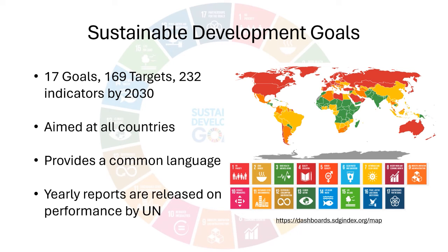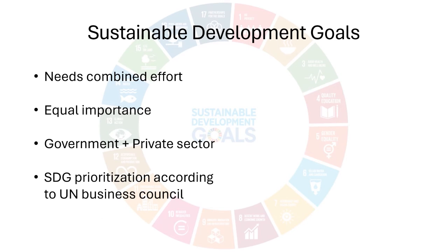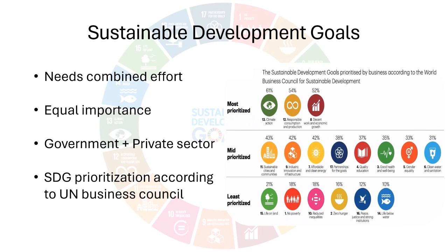You might be surprised about the progress of certain countries. The link is also mentioned in the description below. The SDGs can only be obtained when the government and private sector go together hand in hand. Businesses can target certain SDGs relative to their area of operation and achieve measurable progress. The UN Business Council for Sustainable Development released the prioritization of SDGs by different businesses around the world, as per this figure.